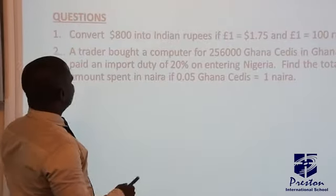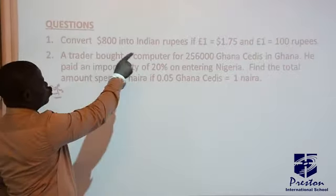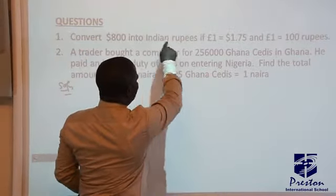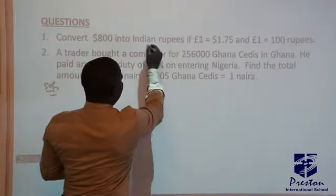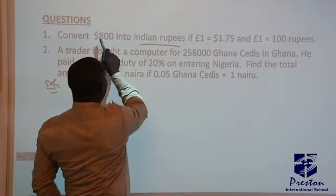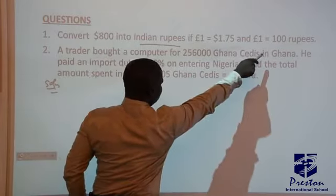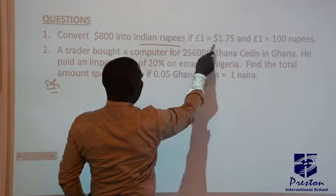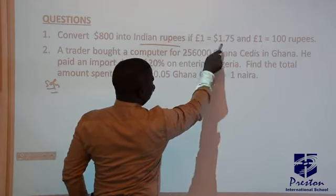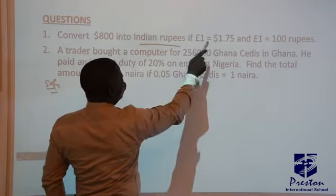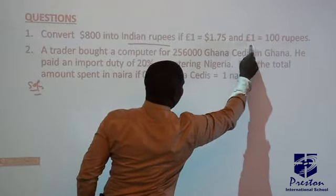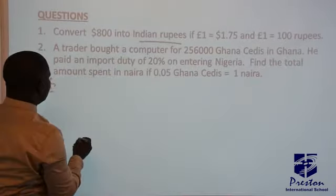The first question says we should convert 800 dollars to rupees. But according to the conversion factor, there is no direct link from dollars to rupees. So what we do is convert the dollars to pounds first, and then from pounds to rupees, because there is a link between pounds and rupees.